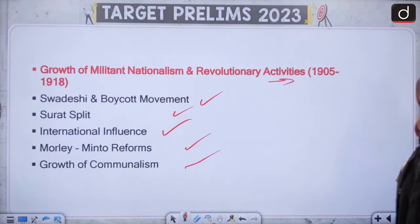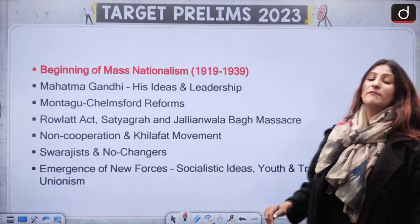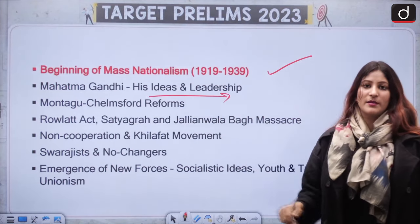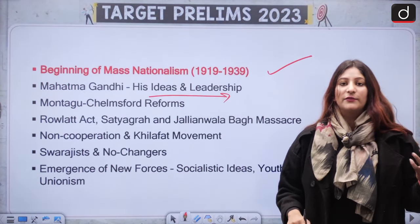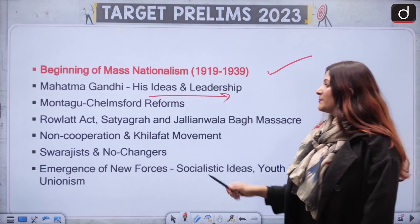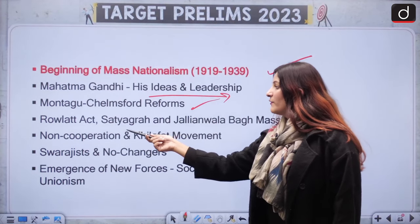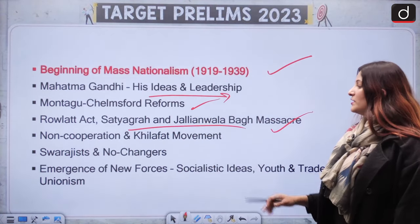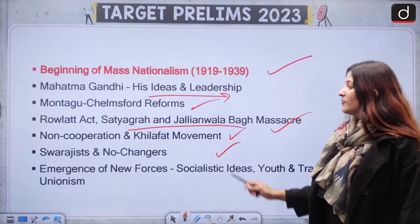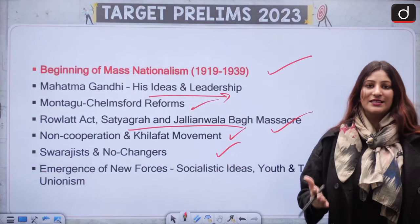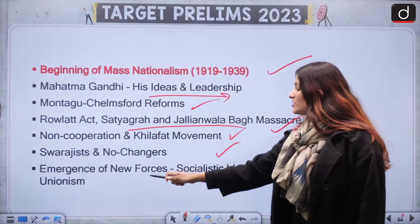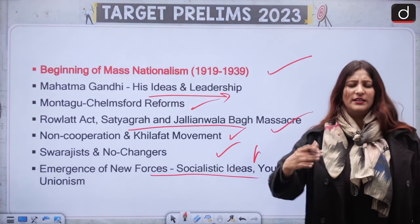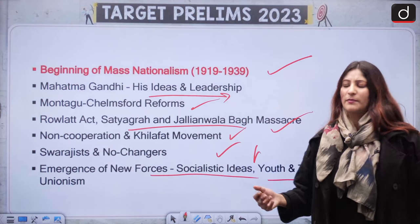Then we have the beginning of Mass Nationalism — the Gandhian era. Mahatma Gandhi, his ideas and leadership, the different movements he experimented with, Montagu-Chelmsford reforms, Rowlatt Satyagraha, Jallianwala Bagh Massacre — very important — Non-Cooperation and Khilafat Movement, who were the Swarajists and No Changers, emergence of new forces including socialist ideas, youth and trade unionism, and different unions and leaders that cropped up.